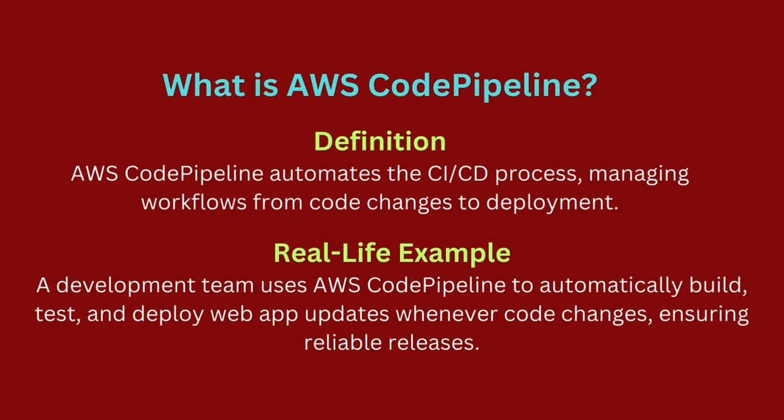For instance, a deployment team using AWS CodePipeline for a web application triggers automated stages whenever they commit new code. These stages include building the application with AWS CodeBuild,